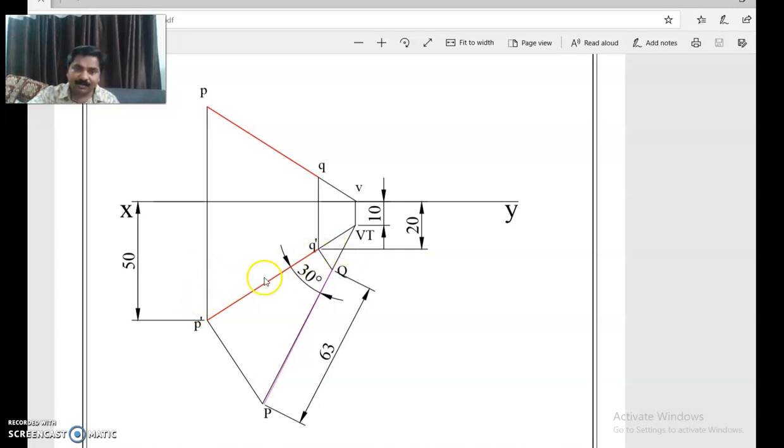Now vertical trace will be on the extension of front view. That is a principle that you must know. So vertical trace is located. And the angle made by the line with VP is 30 degrees.